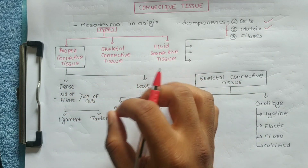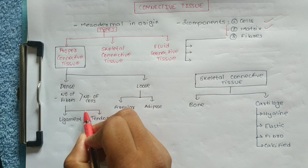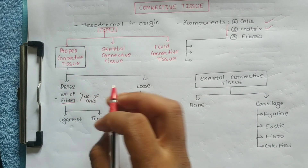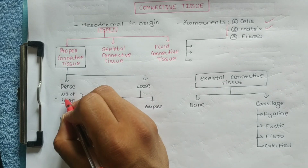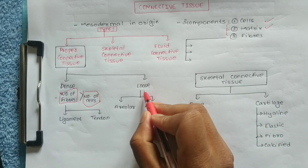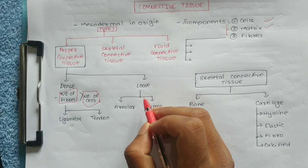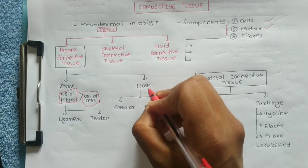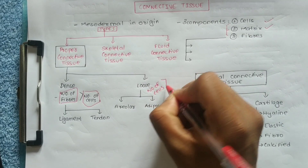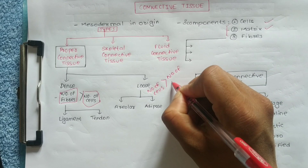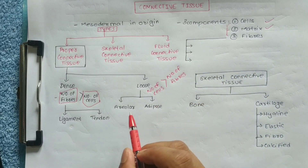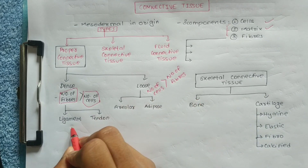Dense Proper Connective Tissue has a high number of fibers and fewer cells, which is why it is called Dense. This tissue is used to identify structures such as ligaments and tendons.